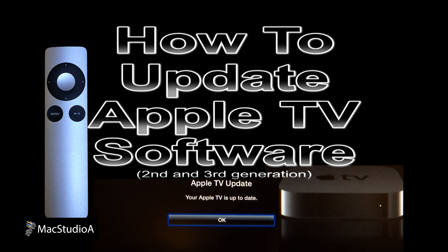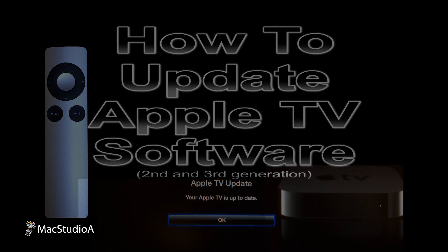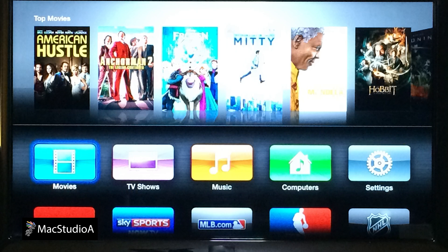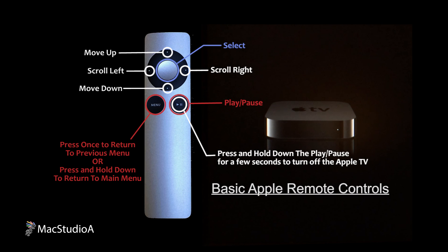Continuing from episode 1, after setting up the Apple TV by whatever option you have chosen, all setup leads to the Apple TV welcome or home screen shown here. Getting the best experience from your Apple TV is making sure that you're running the latest Apple TV software. To perform a software upgrade, I'll be using the Apple Remote to control the Apple TV settings and navigate to your content. The basic buttons on the Apple Remote are shown here.